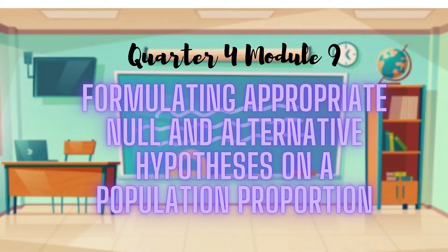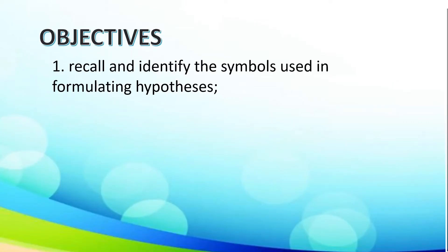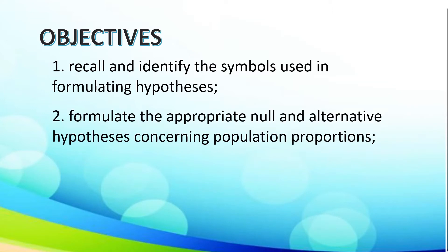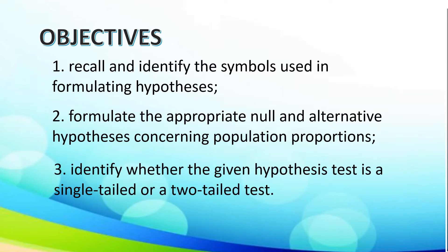Our lesson for today is all about formulating appropriate null and alternative hypothesis on the population proportion. Our objectives are: recall and identify the symbols used in formulating hypothesis; formulate the appropriate null and alternative hypothesis concerning population proportions; and lastly, identify whether the given hypothesis test is a single-tailed or a two-tailed test.